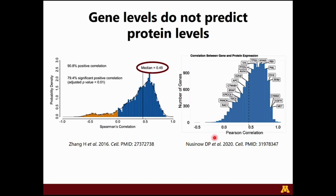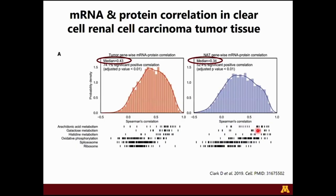Some may say that's a great correlation, some may say that's poor, but I think it's fair to say that focusing on the protein or genome level alone does not give us a full picture of what's actually happening in our biological specimens. An independent study shows the same thing — median correlation between gene and protein level is less than 0.5. Looking at clear cell renal cell carcinoma tumor tissue, the mRNA-protein correlation median is 0.43, and even in normal adjacent tissue, it's 0.34.